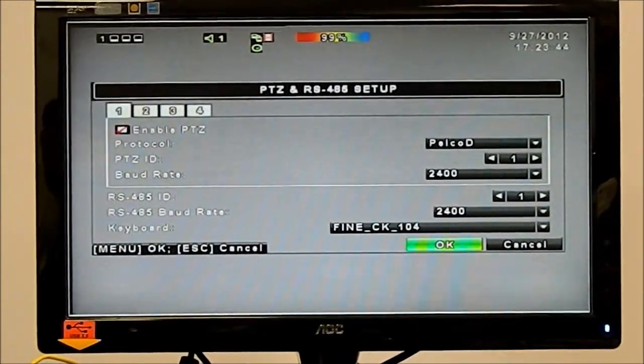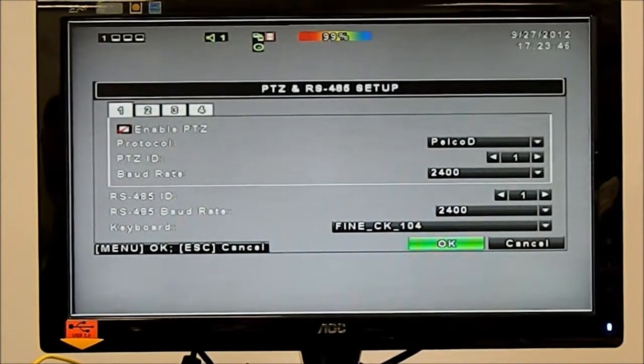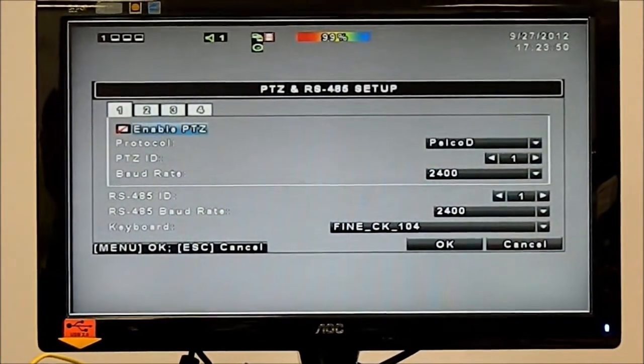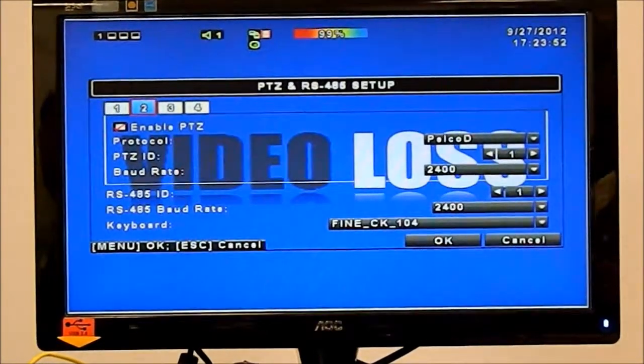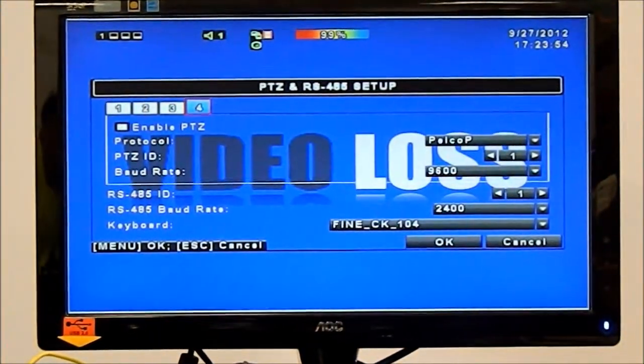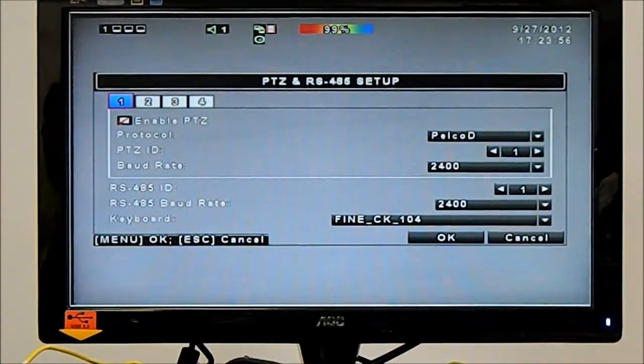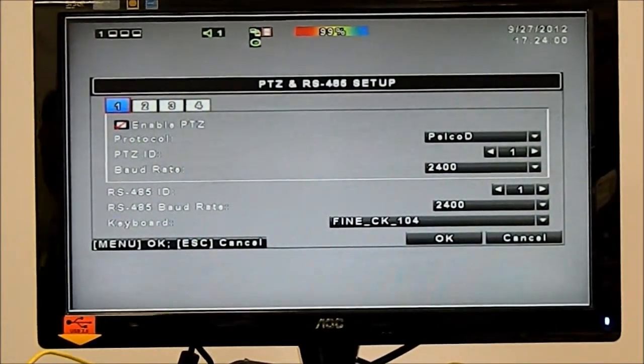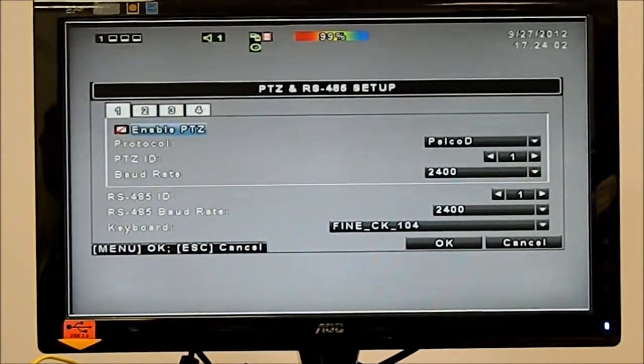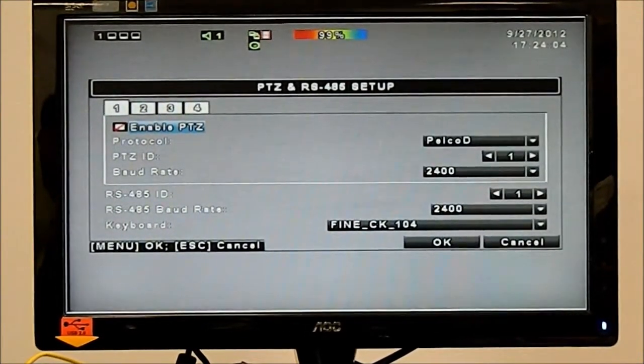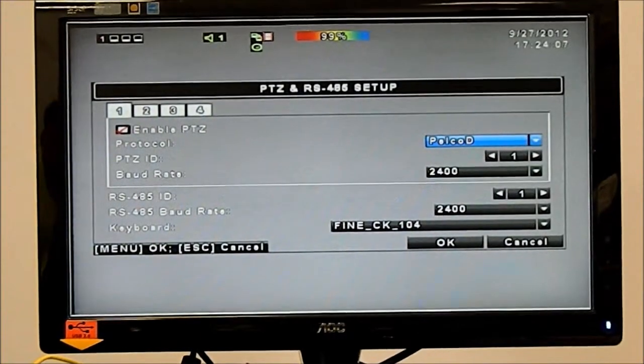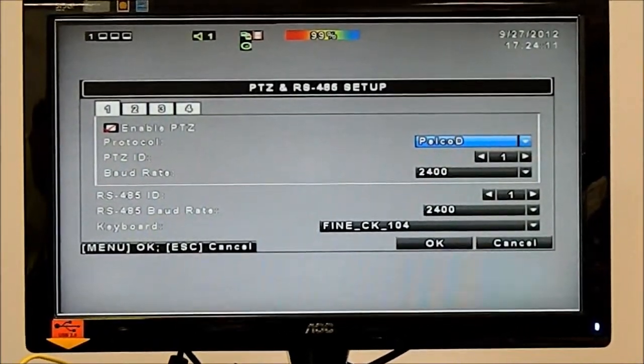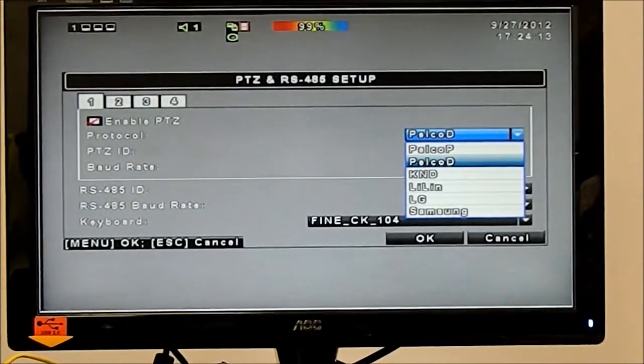you'll see the camera numbers. I'm on camera one. Then you have camera two, camera three, camera four. At this moment, we have connected our PTZ camera to camera one, which is video input one. So you have to make sure this is enabled. Once you click, you've got to select the right protocol. In this case, we are using Pelco D.